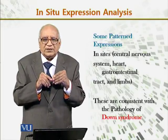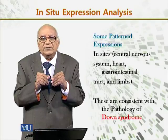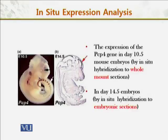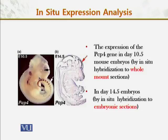These tissues are consistent with the pathology of Down syndrome. The expression of the PEP4 gene in the day 10.5 mouse embryo by in-situ hybridization to whole mount section, and in the day 14.5 embryo by in-situ hybridization to embryonic section, is illustrated in this diagram.